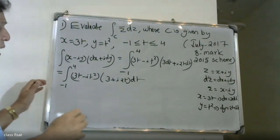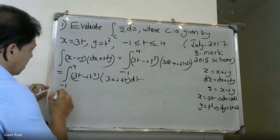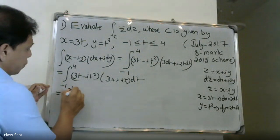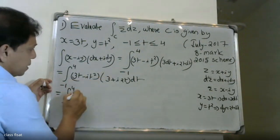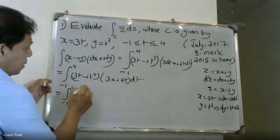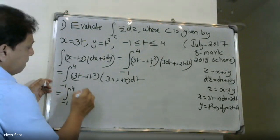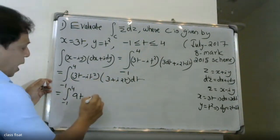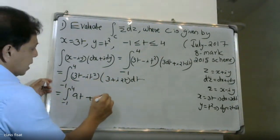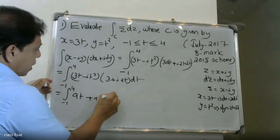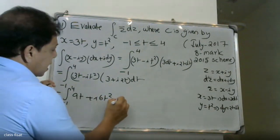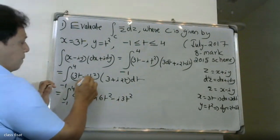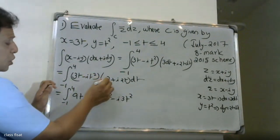Now let's see how we work. The integral from minus 1 to 4: we expand 3t into 3, giving 9t; then 3t into i·2t gives i·6t squared; then minus i·t squared into 3 gives minus i·3t squared; and minus i·t squared into i·2t gives minus i squared·2t squared.